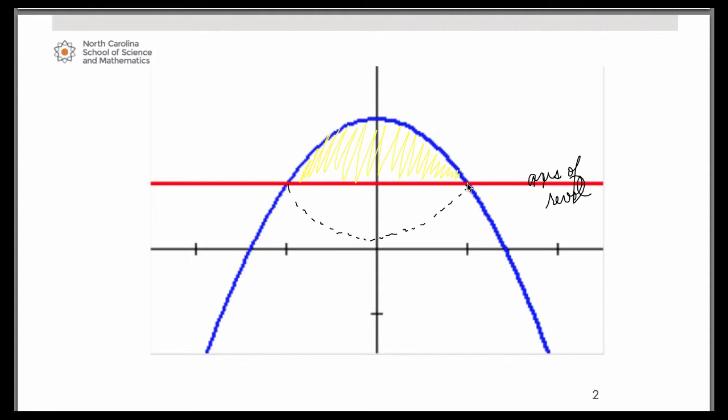According to the disk method, the representative rectangle that we draw is going to have two characteristics. It's going to be perpendicular to your axis of revolution and also touching it. As we saw in the lesson, imagine having infinitely many rectangles and we're simply choosing one to use as our demonstration.